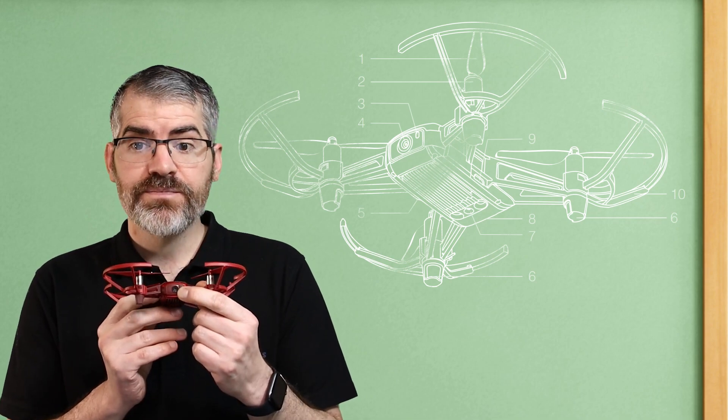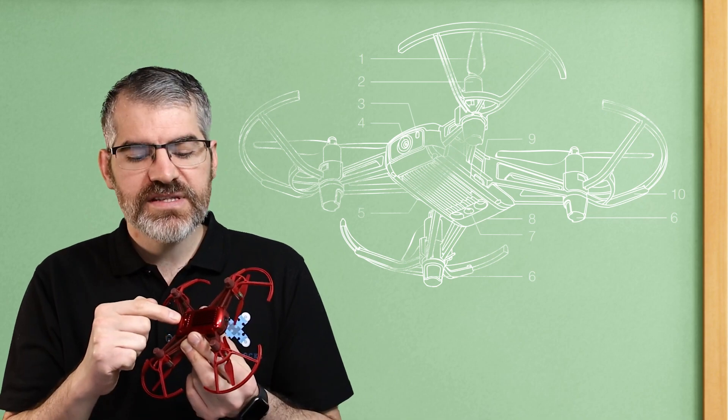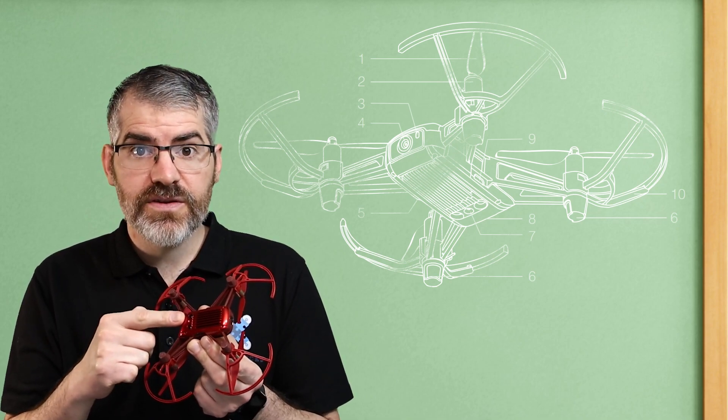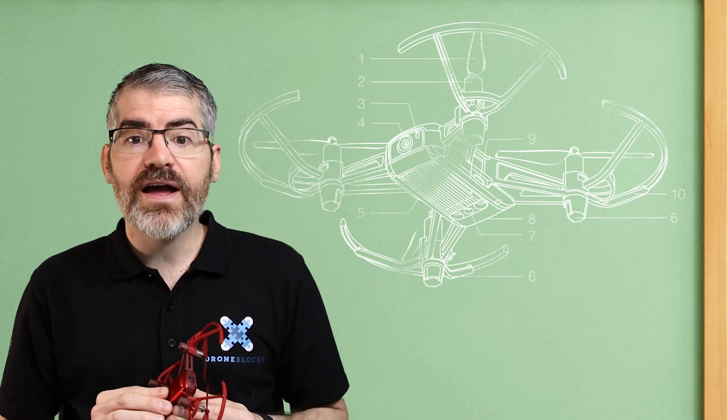Number four is the little camera. Number five is the power switch. Number six are your antenna. Number seven, these tiny little dots here, your visual positioning system. That's what tells the drone how high above the ground it is.